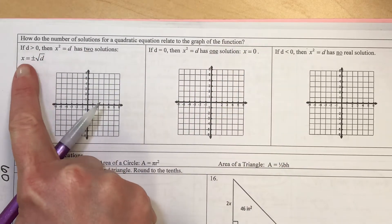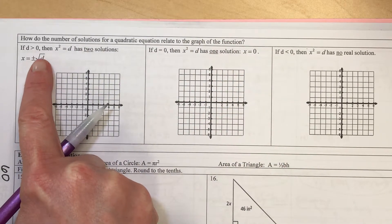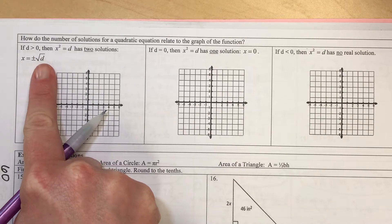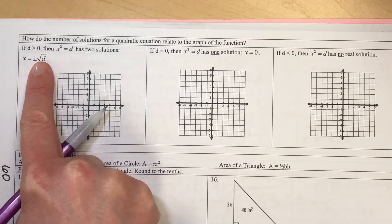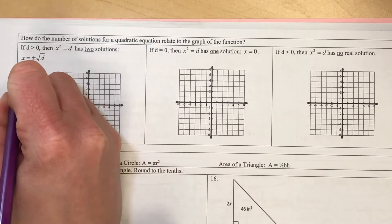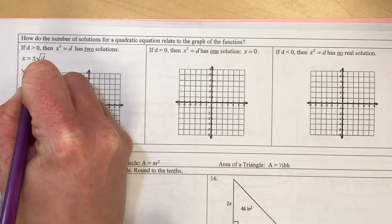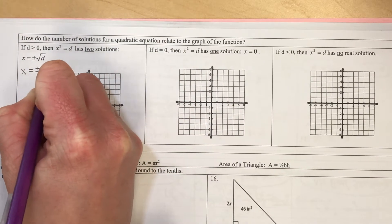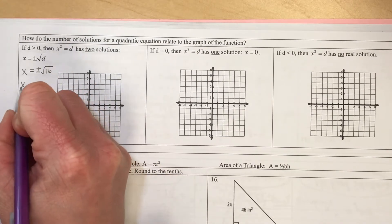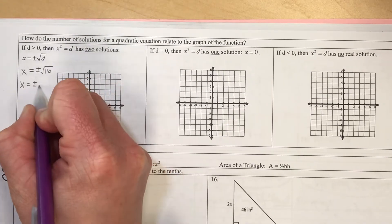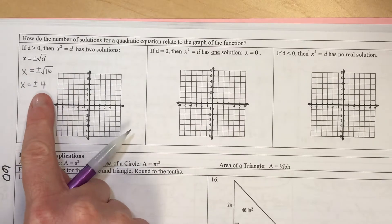If what we're solving for is a positive number, so if you have x equals the square root of a positive number, I'm just going to throw in a positive like this. If you're solving for positive or negative square root of a number like 16, that's going to give you two answers, for example, 4 and negative 4.